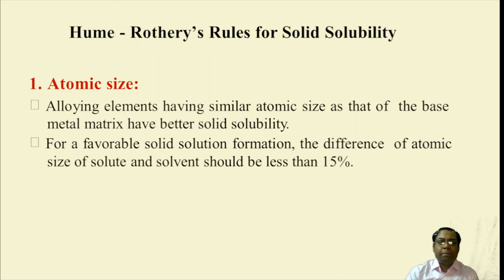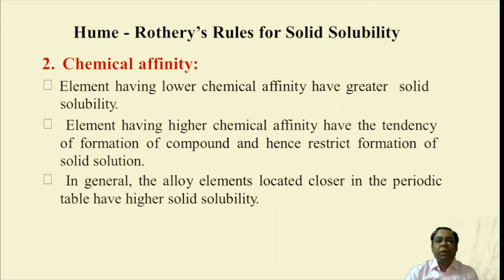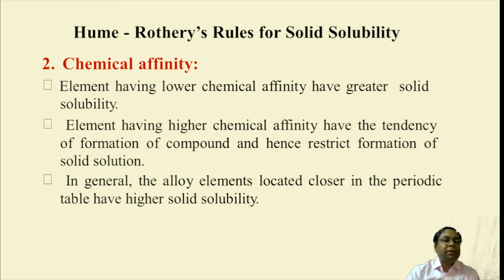The first factor is atomic size. Alloying elements having a similar atomic size to the base metal matrix have better solubility. For favorable solid solution formation, the difference in atomic size of solute and solvent should be less than 15 percent. The second criterion is chemical affinity. Elements having lower chemical affinity have greater solid solubility, while higher chemical affinity tends toward compound formation, restricting solid solution.